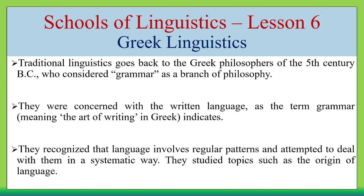Greek linguistics was interested in grammar and considered it as a branch of philosophy. They recognized that language involves regular patterns and attempted to deal with them in a systematic way. They studied topics such as the origin of languages, finding that languages have regular patterns which work in systematic ways, and tried to analyze them.